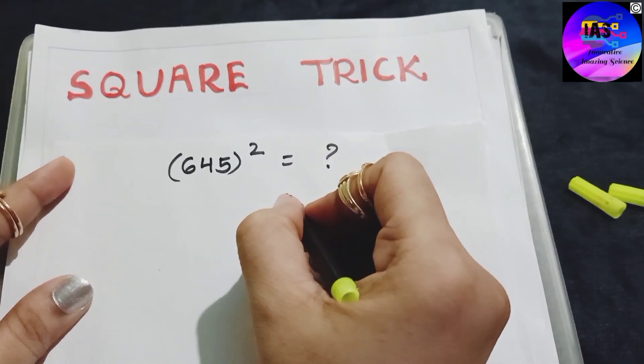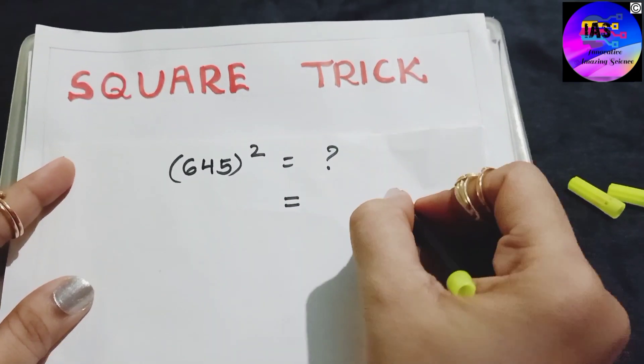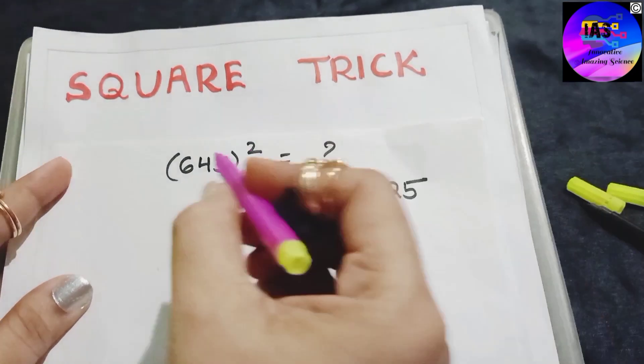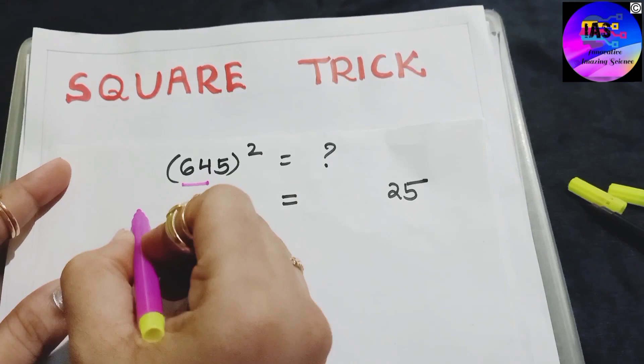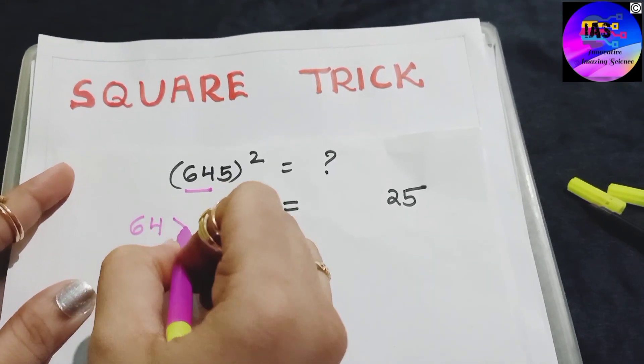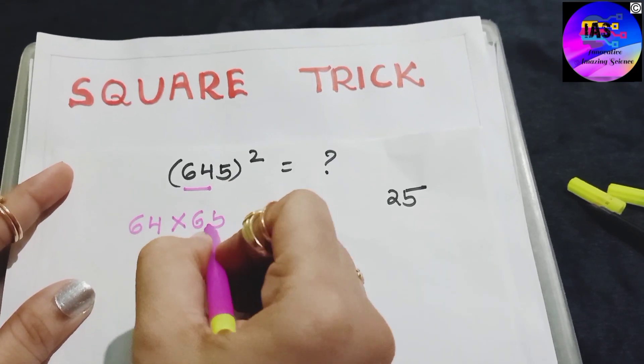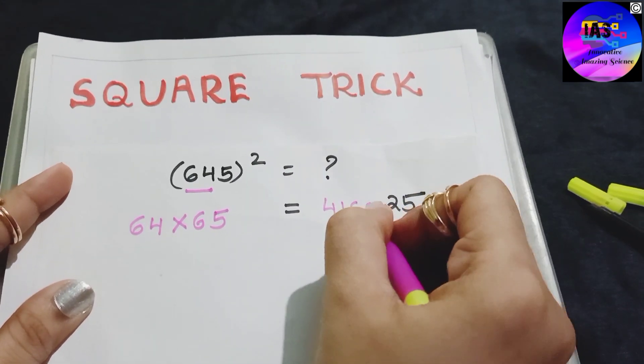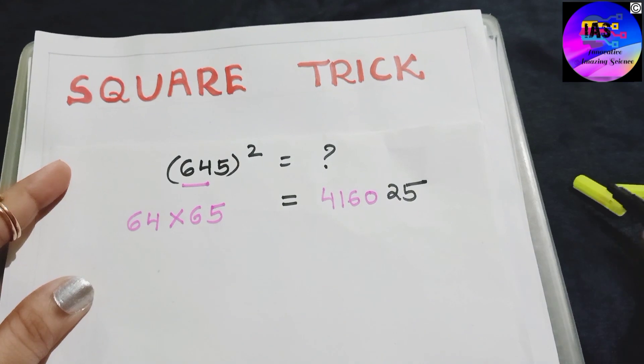First thing what we will do is we will write 25. Then we will remember this 64 and we will multiply with 65, one number extra to that 64, and whatever answer comes we will write it here.